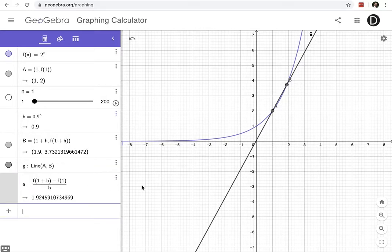So this is my slope. The slope between point A and B currently has a value of 1.9245 and so on. Now, as I turn on this player, I want you to watch what's happening to this value of my slope.